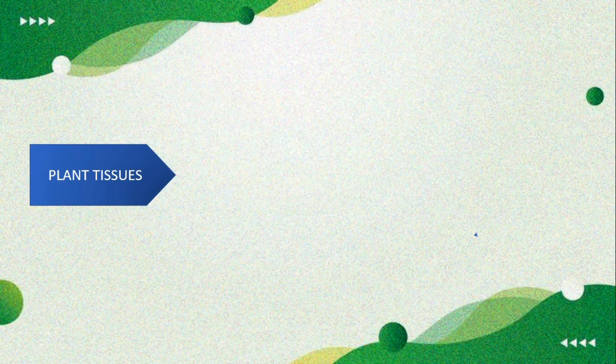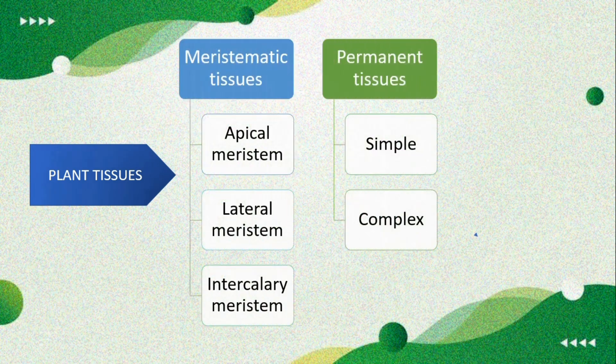Plant tissues are basically categorized into two types: meristematic tissues and permanent tissues. Meristematic tissues are subdivided into three types: apical meristem, lateral meristem, and intercalary meristem. Permanent tissues are divided into simple and complex. Simple tissues are composed of a single type of cell, whereas complex tissues are composed of more than one type of cell.